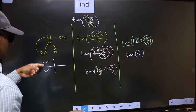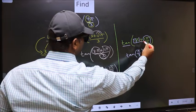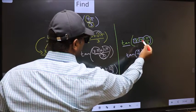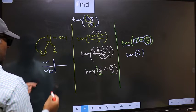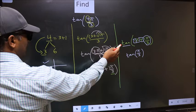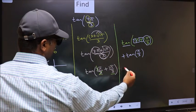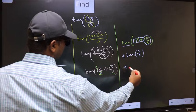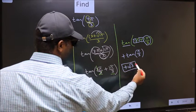So now to select the quadrant we should look at this symbol. Here we have plus. That means the angle lies in the third quadrant. And in the third quadrant tan is positive. So we should put plus. So plus tan π/3 is √3. This is our answer.